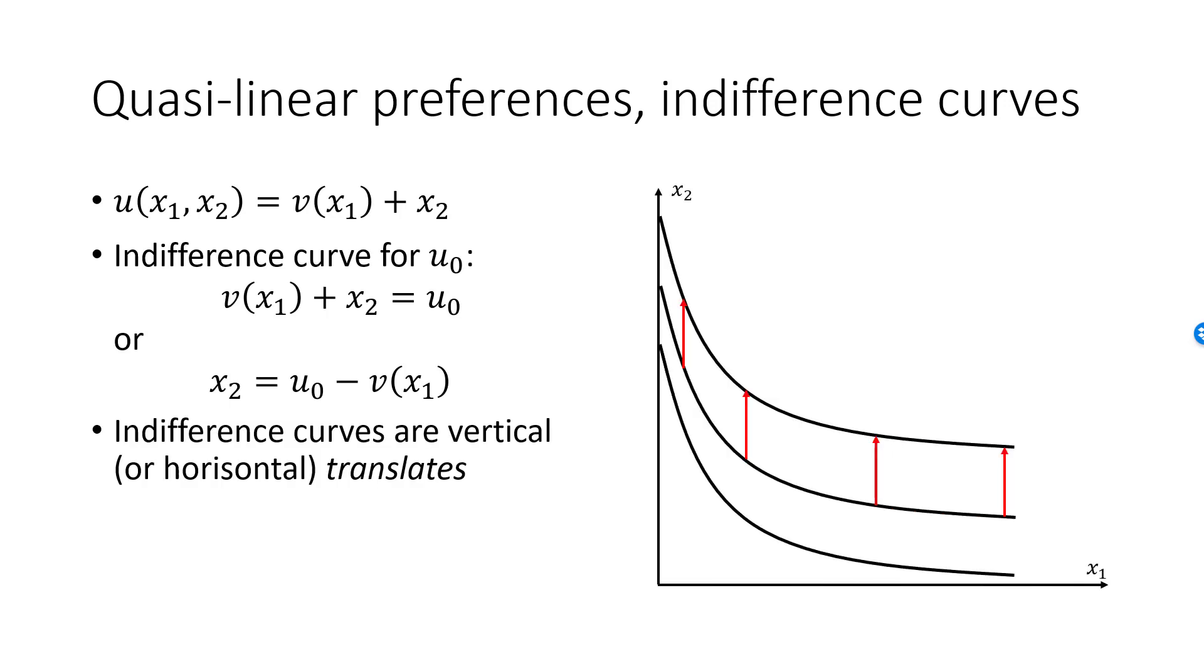The vertical distance between two indifference curves is the same for all values of $x_1$. To see why, say that $v(x_1) = \sqrt{x_1}$. The indifference curve for $u_0 = 20$ has the equation $20 - \sqrt{x_1}$. The indifference curve for utility 30 has the equation $30 - \sqrt{x_1}$. The graph of the second indifference curve will always be 10 units above the graph of the first one.